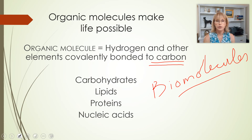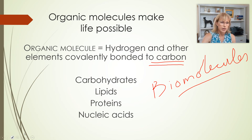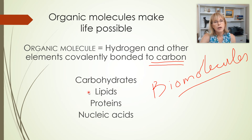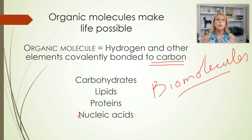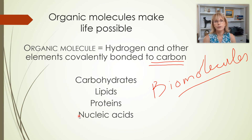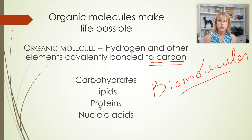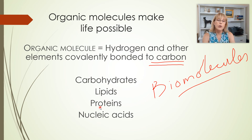Biomolecules are all organic molecules. There are four kinds of organic molecules we're going to talk about. We're going to start by talking about carbohydrates, which are the simplest of the biomolecules. Then we will talk about lipids, also known as fats. After that, we will talk about proteins. And finally, we will talk about nucleic acids. You may notice this list is similar to the label on any food package — carbohydrates, fat, and protein. There are also nucleic acids in food; it's just not required by law to be labeled. The reason this is in our food is because life is made out of those, which means you are made out of those.